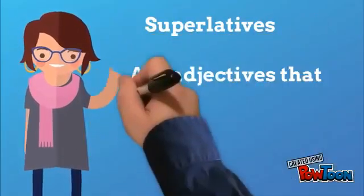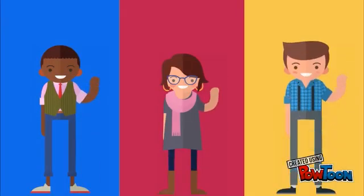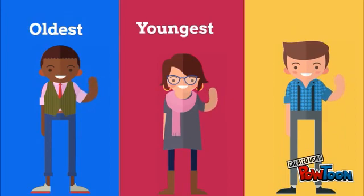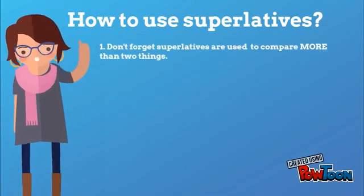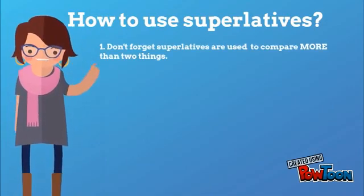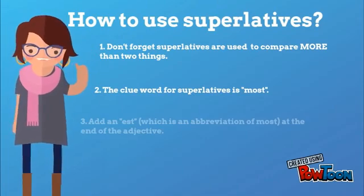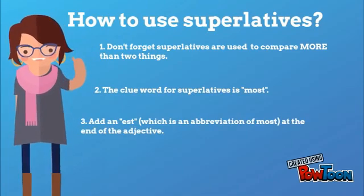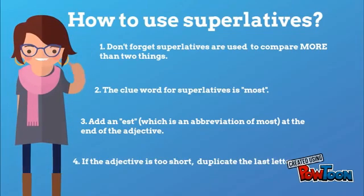Superlatives are adjectives that compare more than two things — like comparing three people to see which one is the oldest, the youngest, and the tallest. How to use superlatives? Don't forget, superlatives are used to compare more than two things. The clue word for superlatives is 'most' or '-est,' which is an abbreviation added at the end of the adjective. And if the adjective is too short, duplicate the last letter.